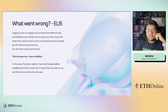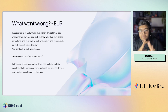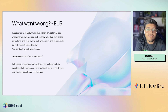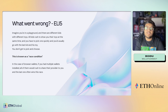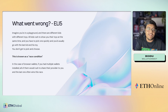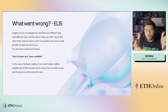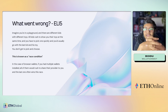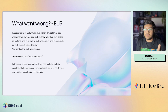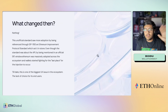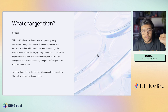Here's an explain-it-like-I'm-five version: imagine you're in a playground, and there are different kids with different toys. All the kids rush to you to show their toys because you're the popular kid. You have to pick one quickly, and you usually go with the very last kid — you don't get the option to pick and choose. This is called a race condition. In the case of browser wallets, if you had multiple wallets installed, all of them would rush to share their provider and the last one would often win the race.